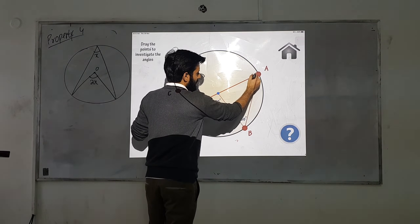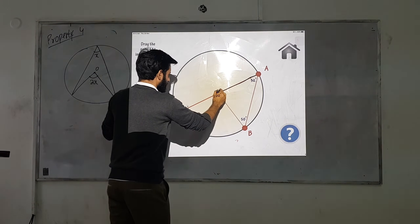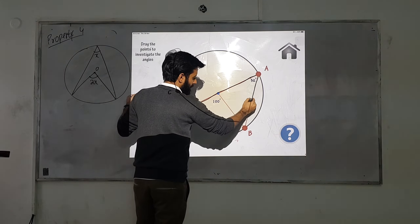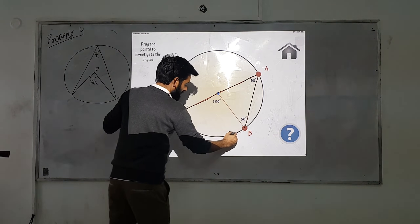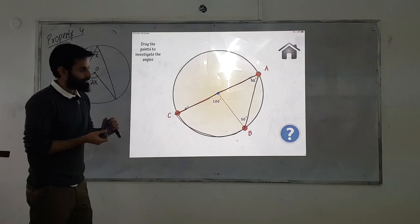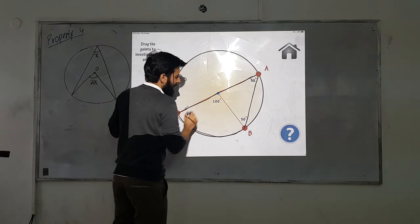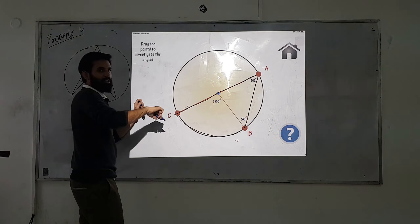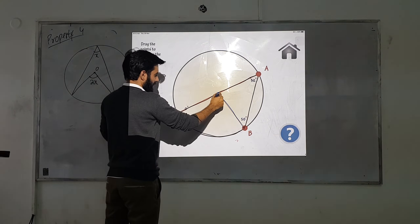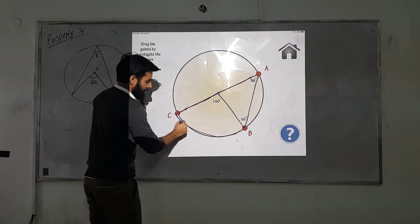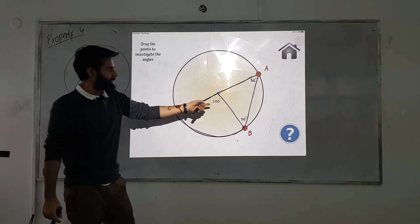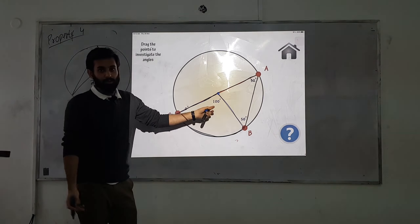A way to identify this is that angle A is making the arc — which arc? This arc here. And the angle of 100 is also making the same arc — the same arc from C to B — one from the circumference and one from the center.